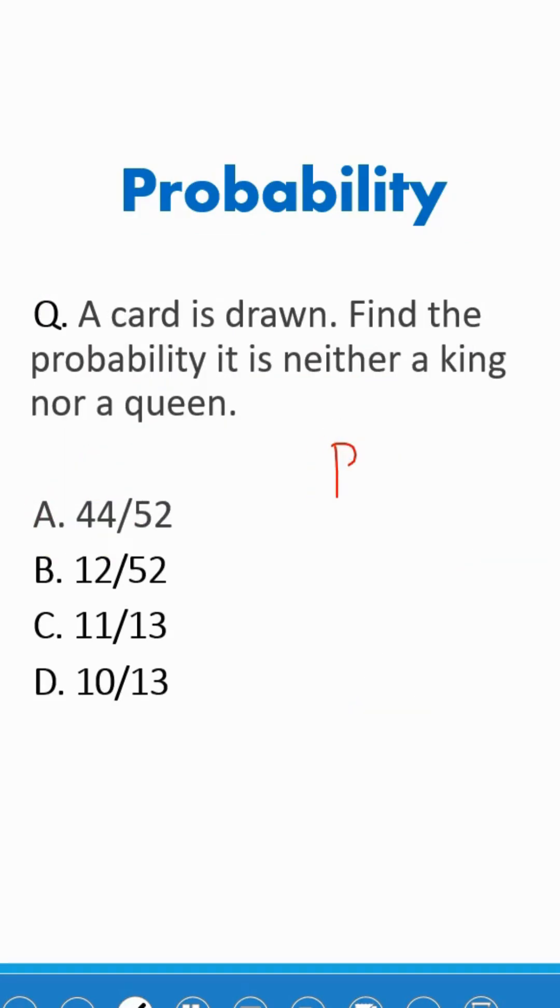Here also we'll use the formula P equals favorable outcome upon total outcome. The question is a card is drawn, find the probability it is neither a king nor a queen.